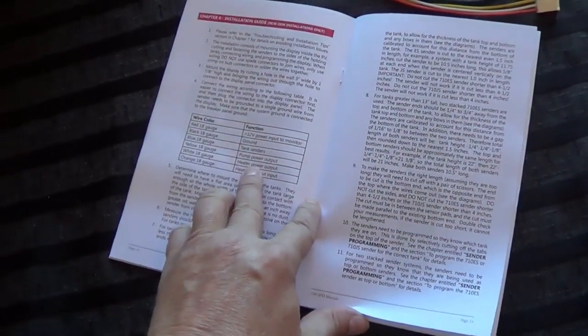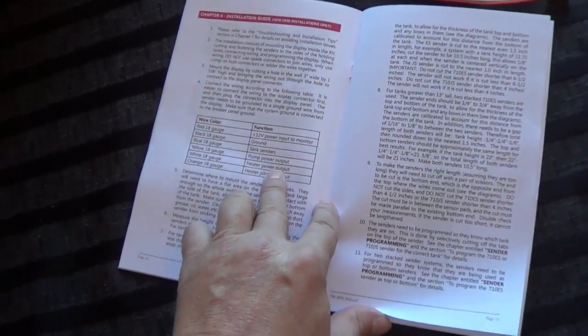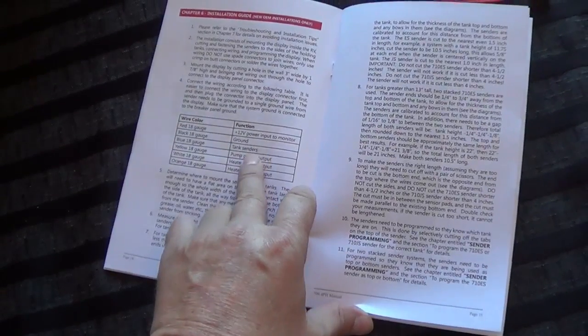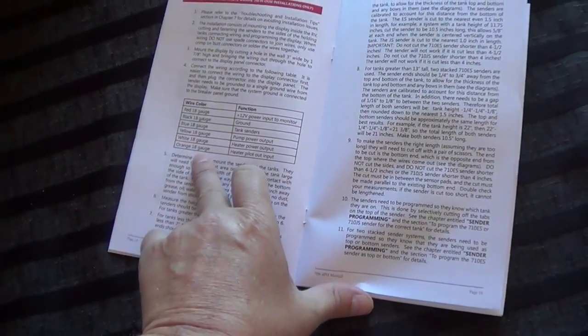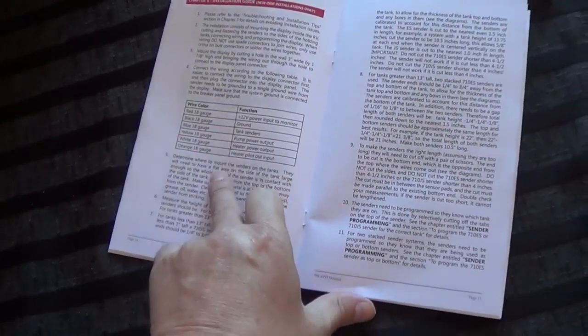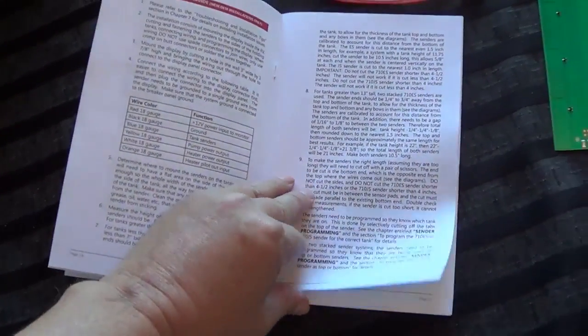Oh, there we go, there's the wiring diagram. So we've got 12 volt power to monitor ground tank sensors, pump power, and it's got the color codes. So I'm hoping the wiring in my trailer is going to be similar.